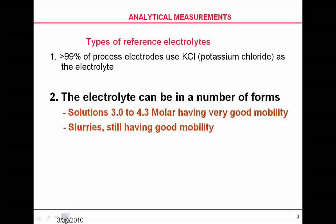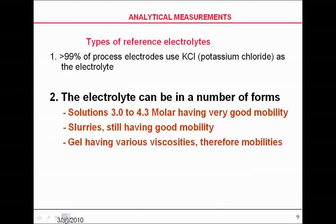You can use a slurry, which also has still good mobility. If you think about potassium chloride or reference solution, what you want it to do is migrate. You want it to migrate out of the reference electrode and into the solution. So you're looking for something that has good mobility.